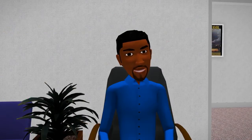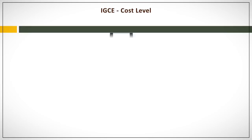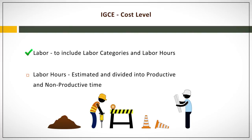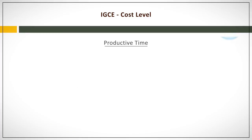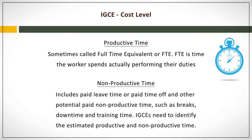For my current purchase, it looks like I'm working with a cost level IGCE. Can you help me understand these cost elements in further detail? Sure. Let's start with labor. The requiring activity should identify all labor categories required for each task by contract line item number for each year of anticipated effort, to include all options over the life of the contract. Labor hours are estimated but are divided into productive and non-productive time. Productive time, sometimes called full-time equivalent or FTE, is time the worker spends actually performing their duties. Non-productive time includes paid leave time or paid time off and other potential paid non-productive time, such as breaks, downtime, and training time. IGCEs need to identify the estimated productive and non-productive time.